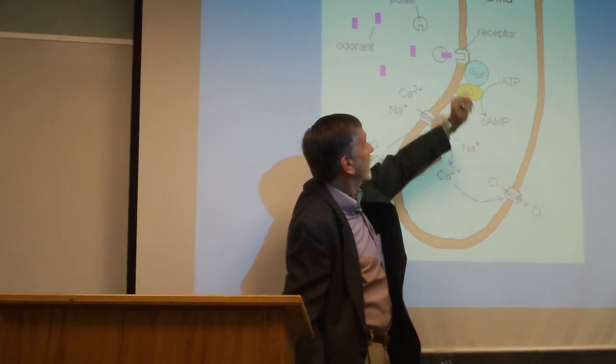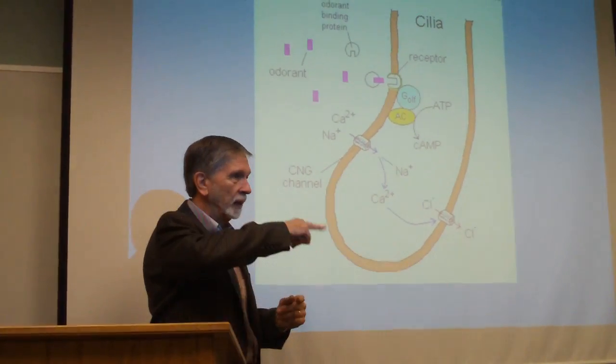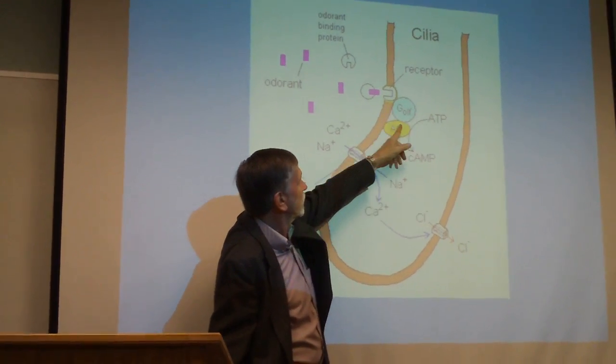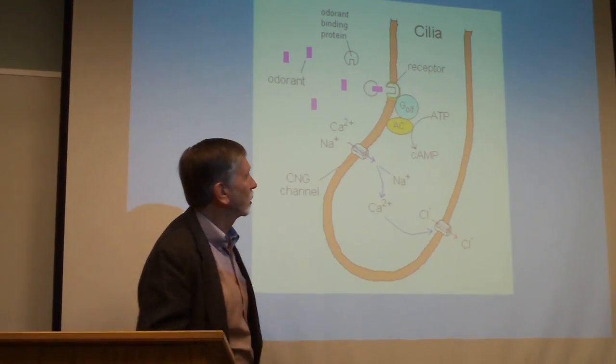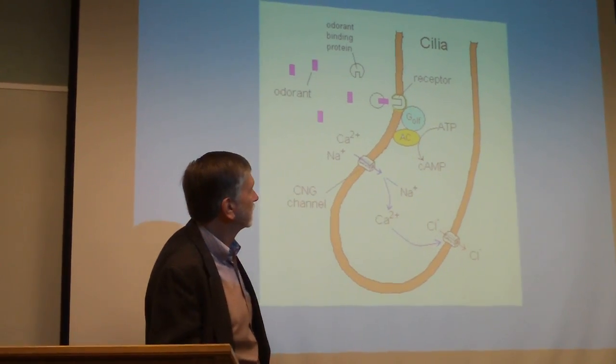So it then interacts with the receptor, which is a protein embedded in the membrane of that little arm of the cilium. And it's in close association with this protein that's called a G-protein. This is the olfactory G-protein.